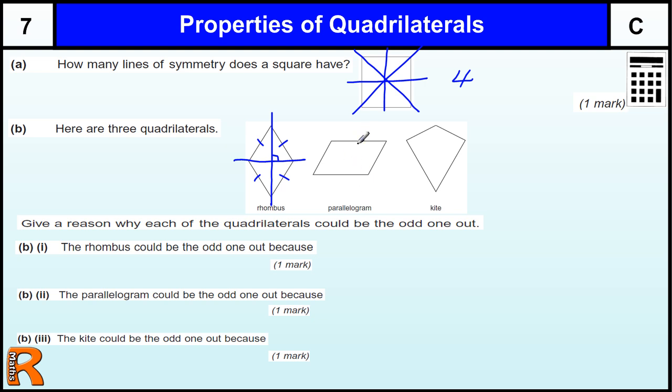Parallelogram, we have opposite sides parallel. Okay, that's the same in the rhombus as well. We have no lines of symmetry, no symmetry.